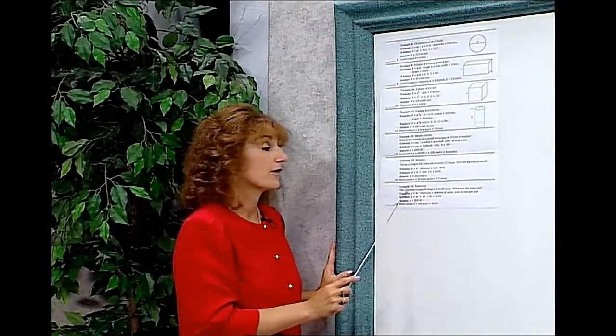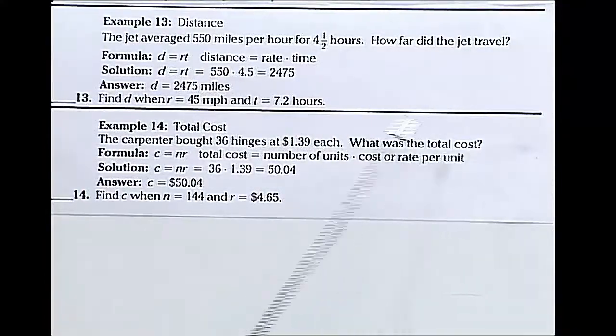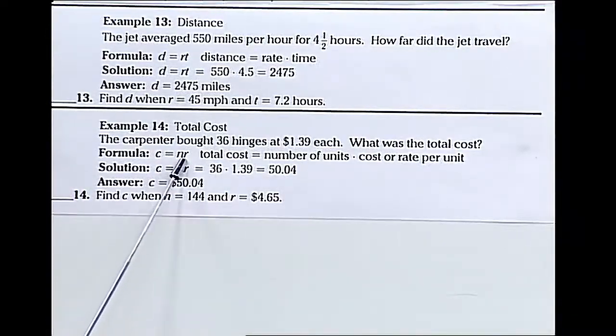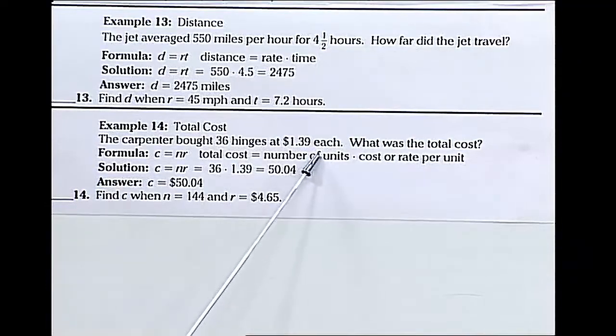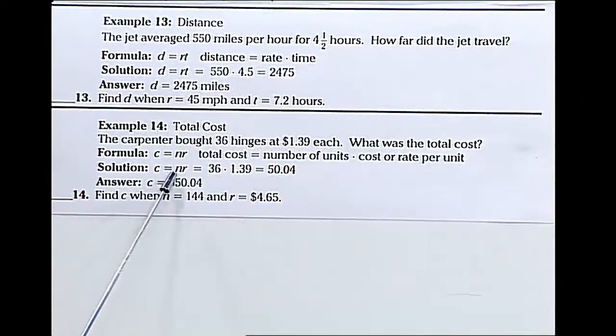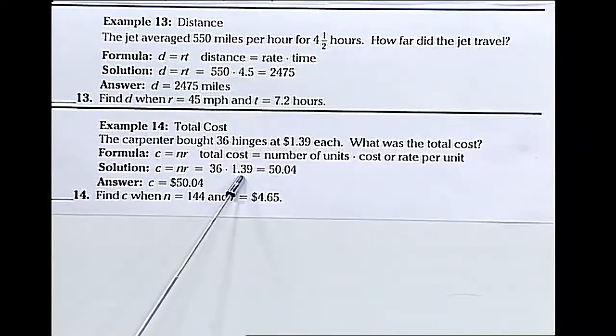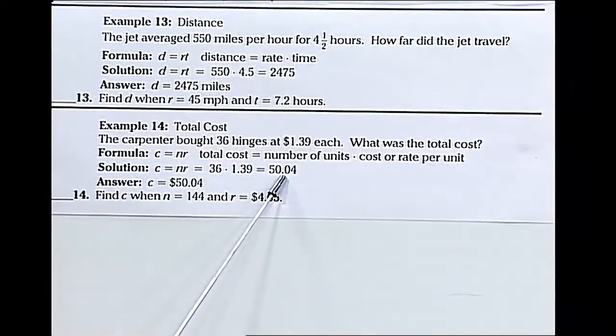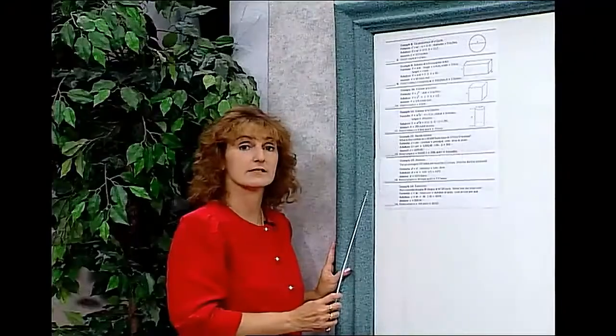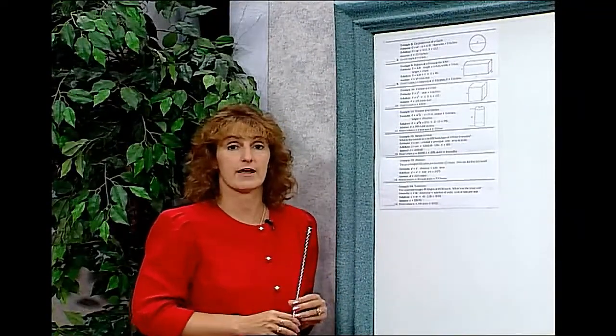Last but not least, total cost. The carpenter bought 36 hinges at $1.39 each. What was the total cost? Our formula for cost is n times r, where n is the number of units, how many you bought, and r is the cost or rate per unit. We need n times r, 36 hinges times $1.39, gives us $50.04. When you use formulas, make sure you substitute the right number in for the right variable and then do your mathematics correctly.